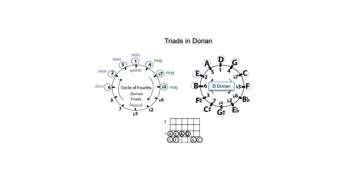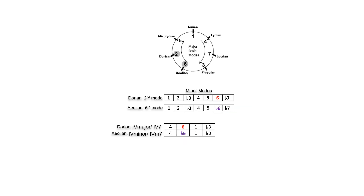For D Dorian, the sequence in fourths starts with B, followed by E, A, D, G, C, and F. The sixth note distinguishes Dorian from Aeolian, which has a flat 6. This gives Dorian a 4 major triad and a 4 dominant 7th, while Aeolian's 4 chord is a minor triad and a minor 7th.